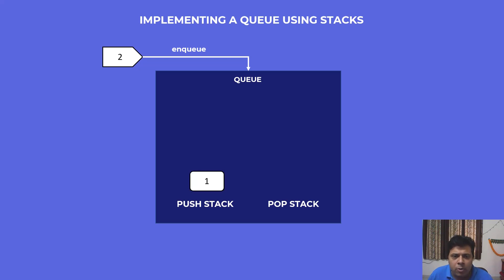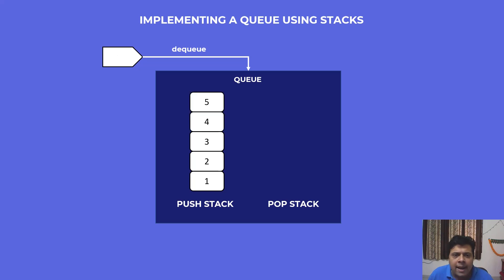Suppose our new data structure receives an enqueue request with element 1 — we just put that onto the push stack. We receive another request, we simply put that element on the stack. Third request, we push that element as well. Fourth request with element 4, we push that also. And lastly we receive the fifth request and successfully push that element on top of the stack.